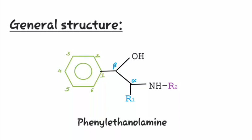First of all, let us see the general structure of Phenylethanolamine. So this is the general structure of Phenylethanolamine. It consists of a benzene ring, carbon side chain and a terminal nitrogen.